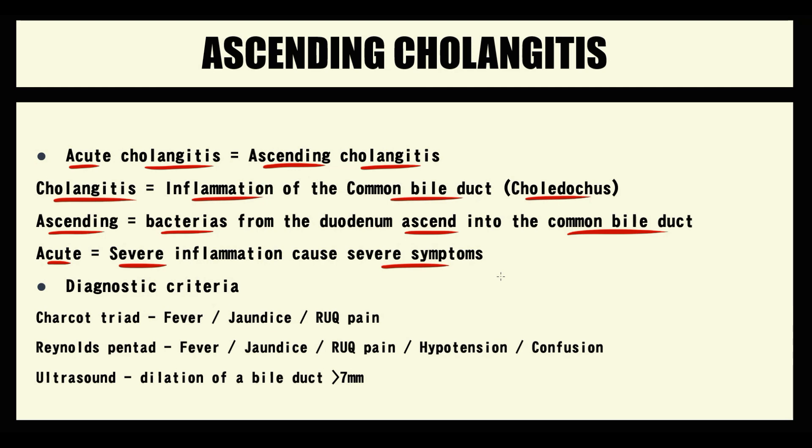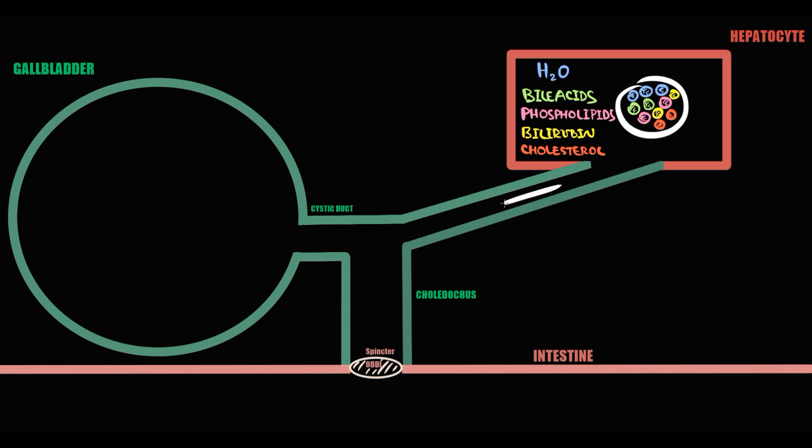Before pathogenesis we have to recall the major concepts from physiology. Once bile is produced by the liver, bile through the bile ducts comes to the gallbladder. And gallbladder is the place where bile is stored until we consume some fatty food.